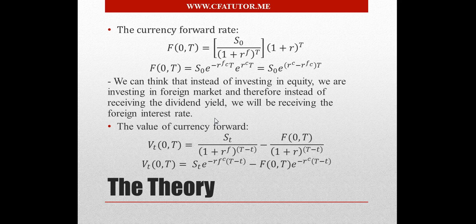Instead of buying a stock, we are buying a foreign currency. We think of the foreign risk-free rate as the dividend yield. So where we were previously adjusting for the dividend yield, we now adjust for the foreign currency rate instead. Essentially, we replace equity with foreign currency and the dividend yield with the foreign interest rate — and that's why this formula makes sense.